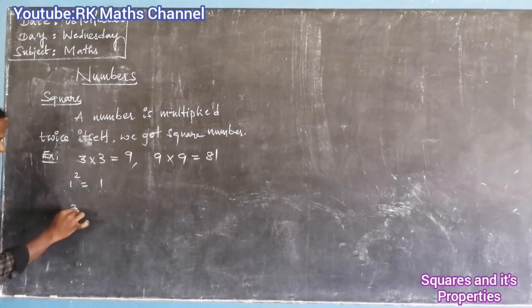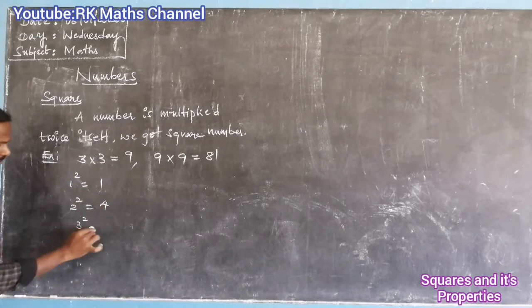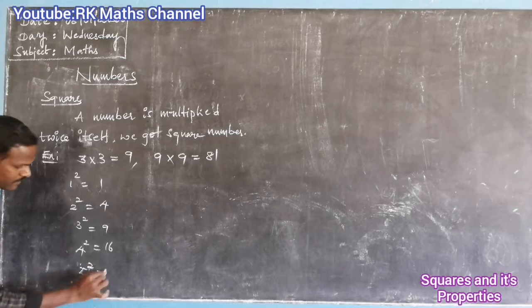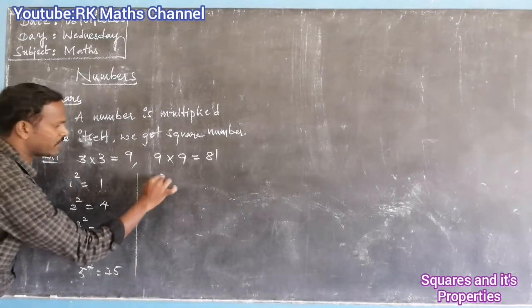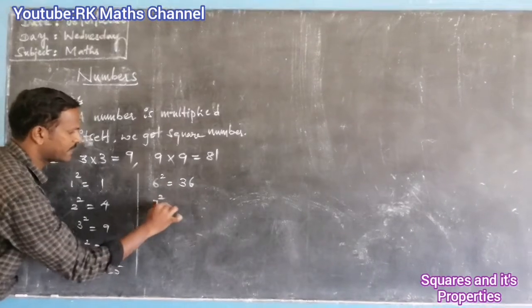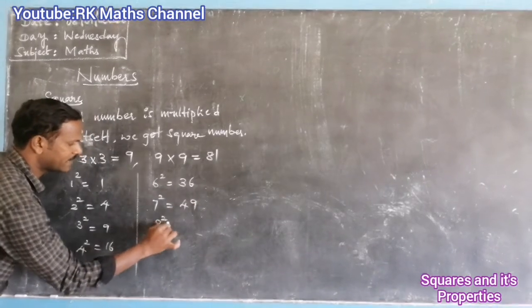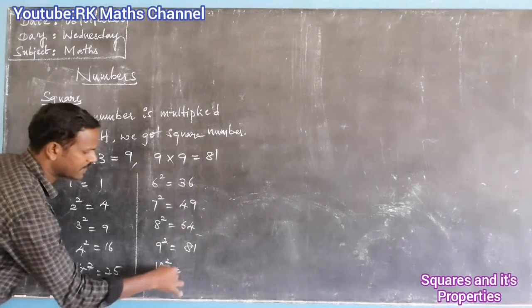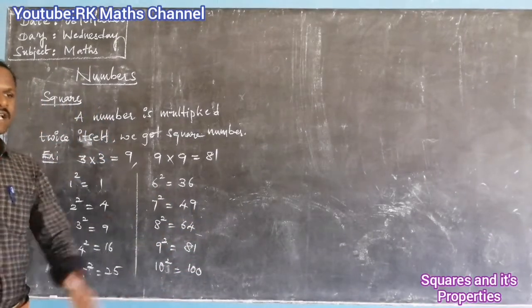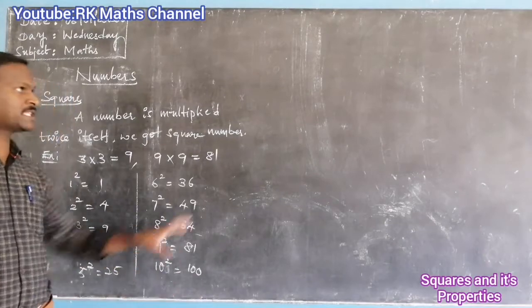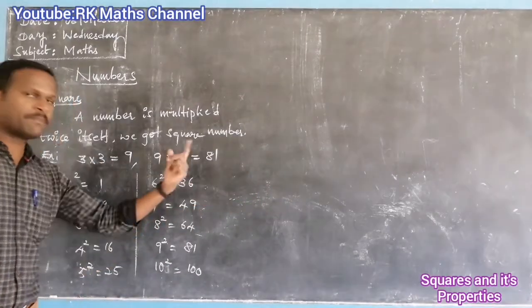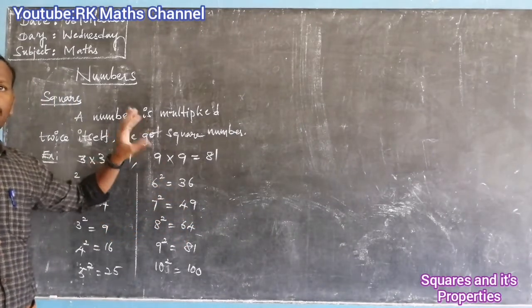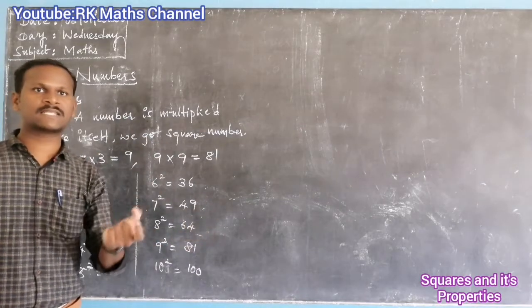Let's go through the squares: 1 squared is 1, 2 squared is 4, 3 squared is 9, 4 squared is 16, 5 squared is 25, 6 squared is 36, 7 squared is 49, 8 squared is 64, 9 squared is 81, 10 squared is 100. So the square is the number multiplied by itself, and the result is the square.